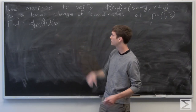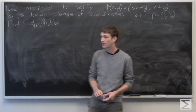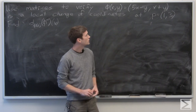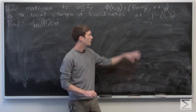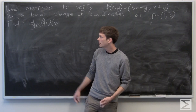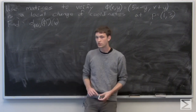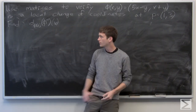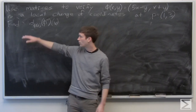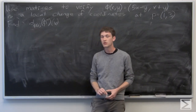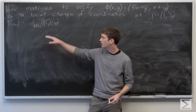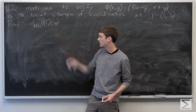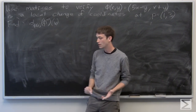In this problem, we're asked to use matrices to verify that phi of x, y equals (5x minus y, x plus y) is a local change of coordinates at the point p equals (1, 3). We're also asked to find the total derivative of phi inverse at phi of p with respect to v.